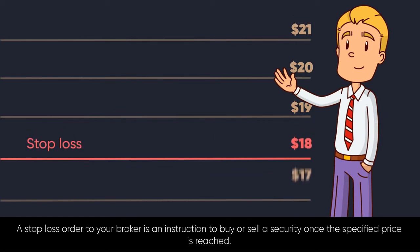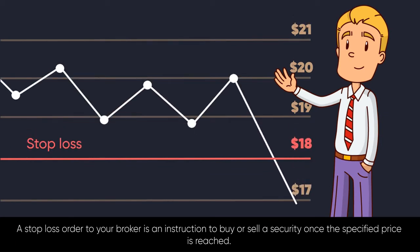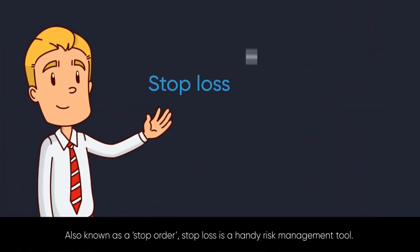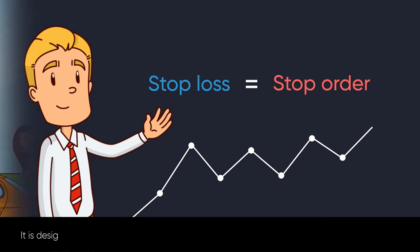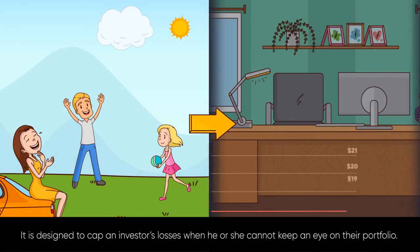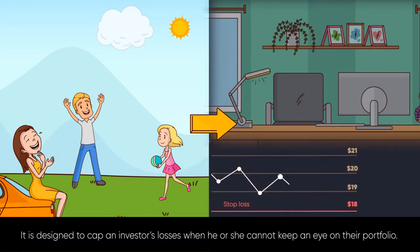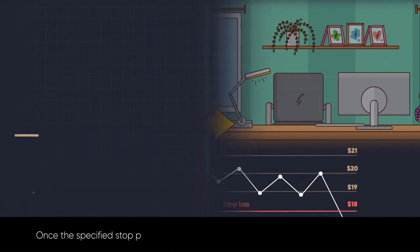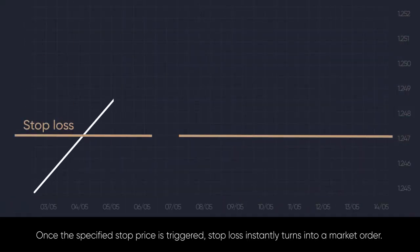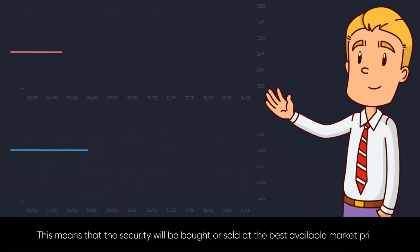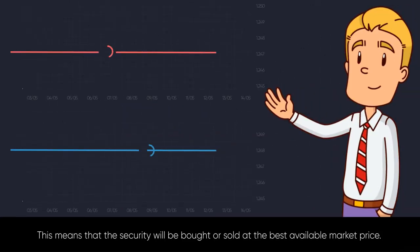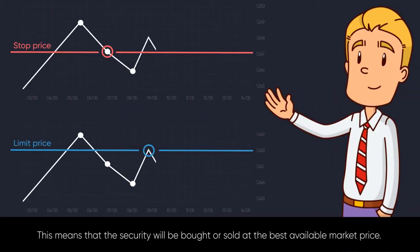A stop loss order to your broker is an instruction to buy or sell a security once the specified price is reached. Also known as a stop order, stop loss is a handy risk management tool. It is designed to cap an investor's losses when he or she cannot keep an eye on their portfolio. Once the specified stop price is triggered, stop loss instantly turns into a market order, meaning the security will be bought or sold at the best available market price.